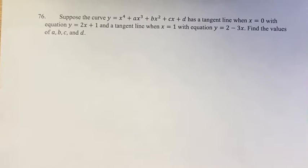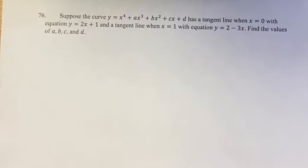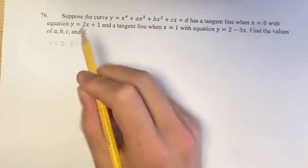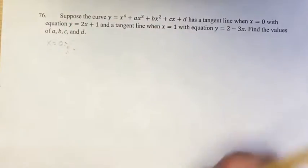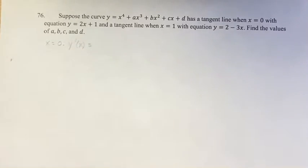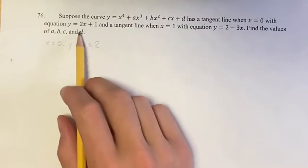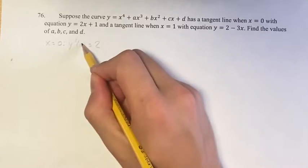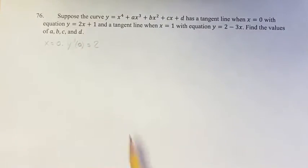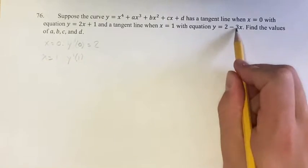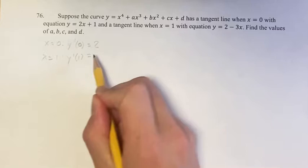So we're given four pieces of information here. We're told that when x equals 0, the derivative of y equals 2. How do we know that? Because the slope of the tangent line is equal to the value of the derivative. So the value of the derivative when x equals 0 would be y prime of 0. And when x equals 1, the derivative is negative 3 — again, the slope of the tangent line equals the value of the derivative.